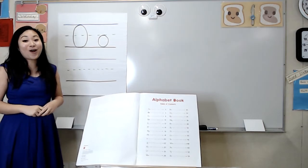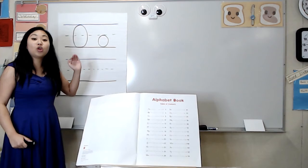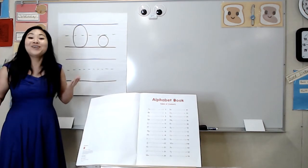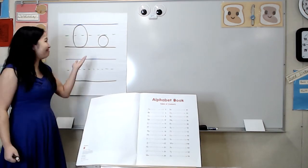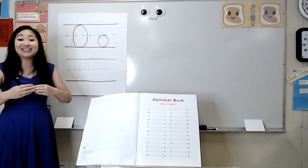This is the letter O. What do you notice about uppercase O and lowercase O? You're right. Uppercase O is bigger, but they look exactly the same. They're both round like circles.